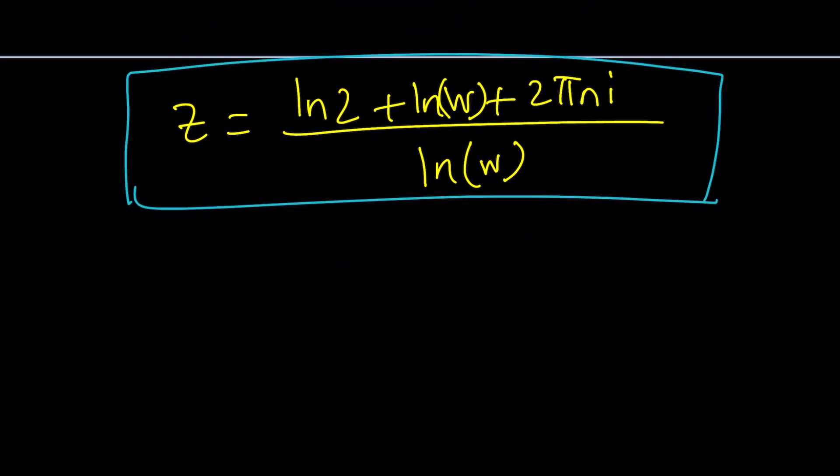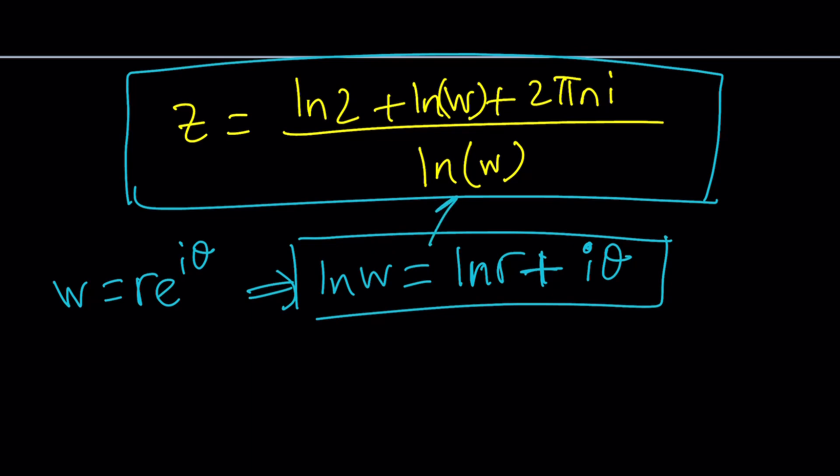Now what is ln w though? We do not know what w is but if w is written as r e to the i theta then ln w would be ln r plus i theta. Of course I'm kind of taking the principal argument here as theta if you want to add multiples of 2 pi n i which we did to find z you can do that. But again if this is ln w I could basically plug it in here and here but I will still need to know r and theta.